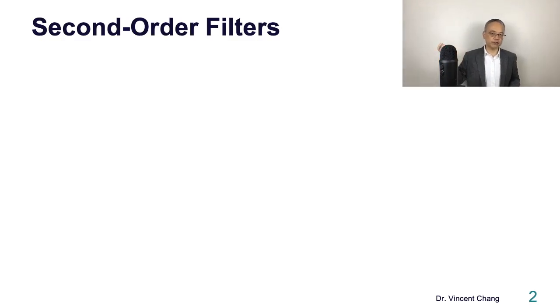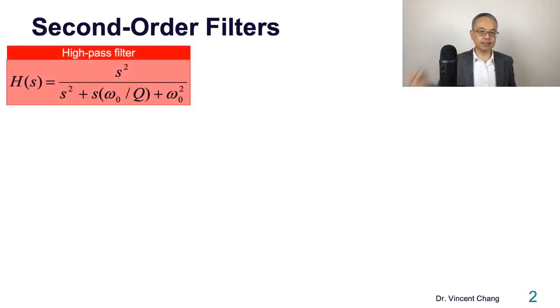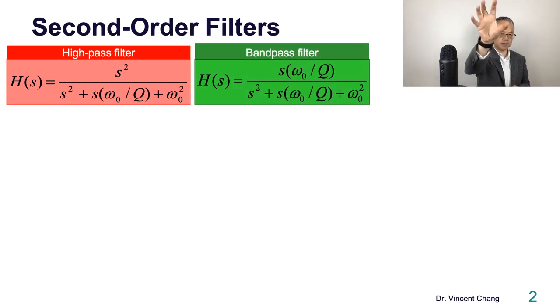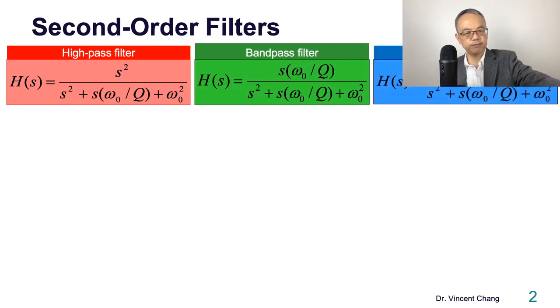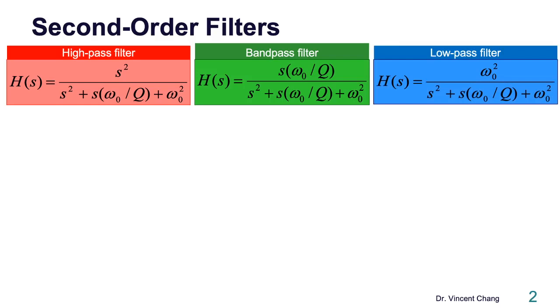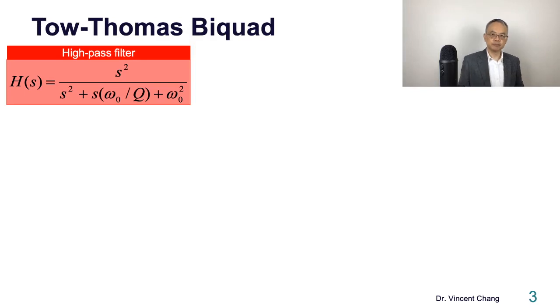Second order filter function. Let's start with the second order filter function of the standard form. The high pass, the denominator polynomial s squared plus s omega 0 over Q plus omega 0 squared. If you bring up the second order, it becomes the high pass. Bring up the first order, it becomes the band pass. And the constant term becomes a low pass filter.